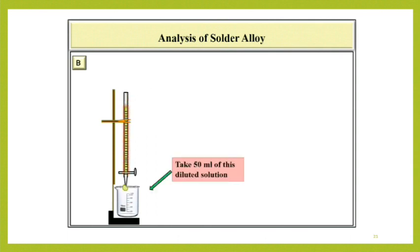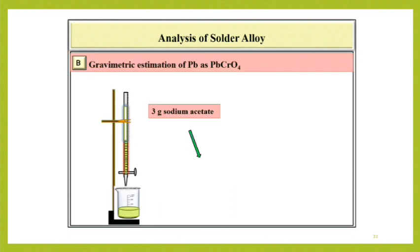Take 50 ml of this diluted solution in a beaker. To this solution, add 3 gram of solid sodium acetate to replace HNO3 by acetic acid.